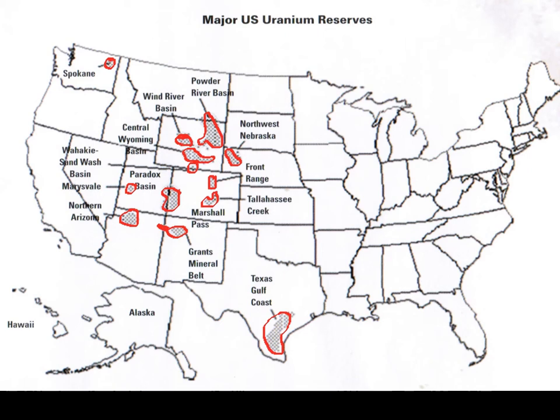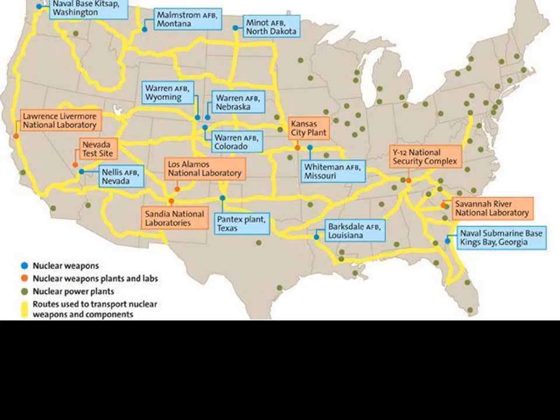Here you can see the major US uranium reserves during the Cold War. This map shows some of the leading research laboratories, which were also the large-scale mass production centers for the assembly of nuclear warheads. These include Lawrence Livermore National Laboratory, Sandia National Laboratories, Los Alamos National Laboratory, the Kansas City plant, the Y-12 National Security Complex, and the Savannah River National Laboratory. You can see here the Nevada test site, not far from Las Vegas.